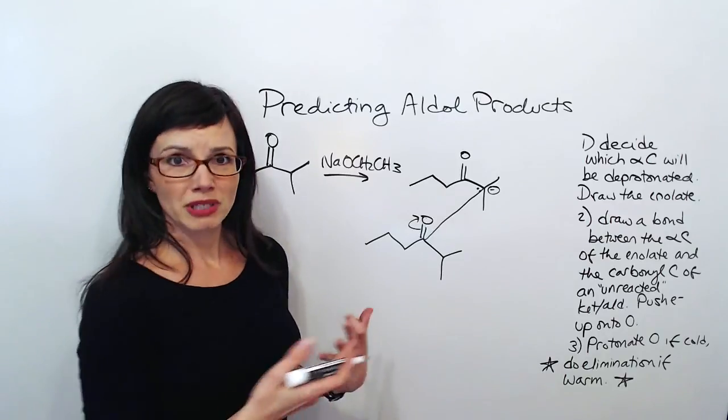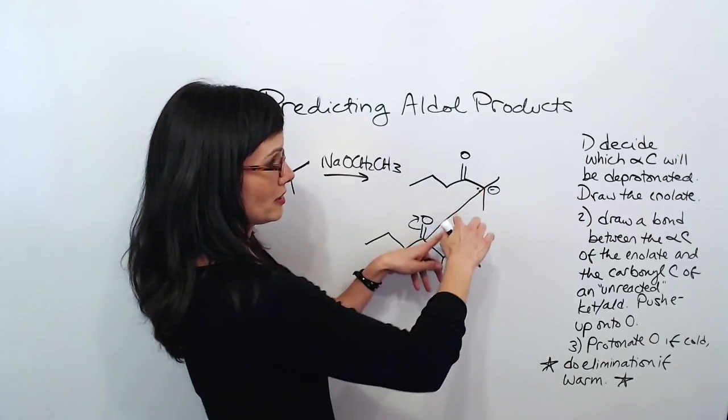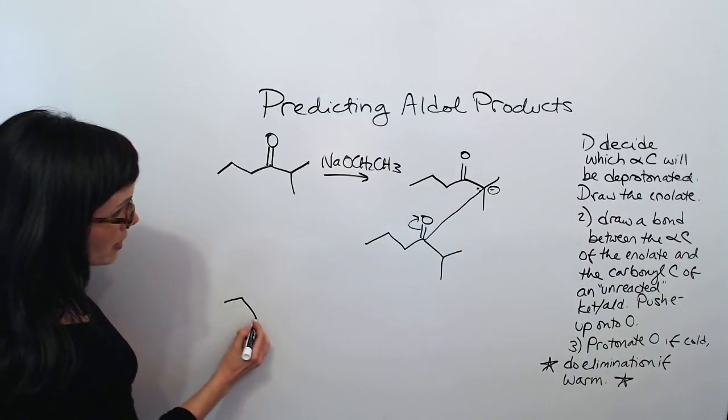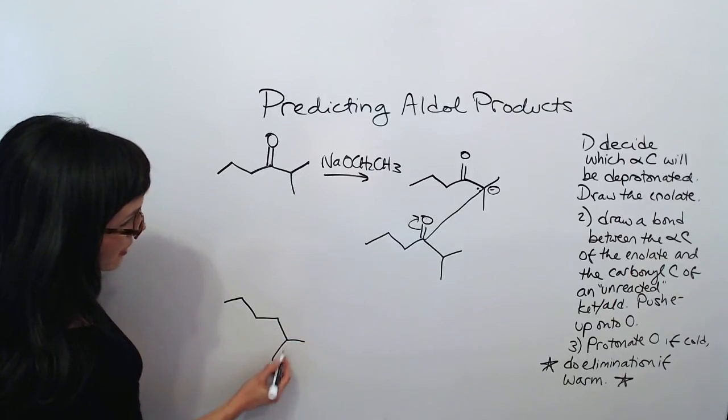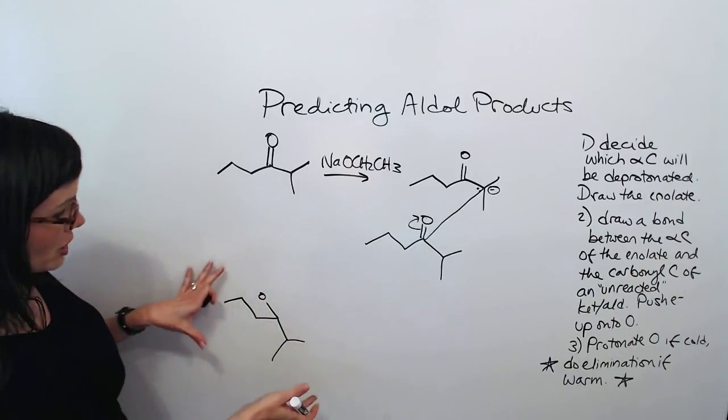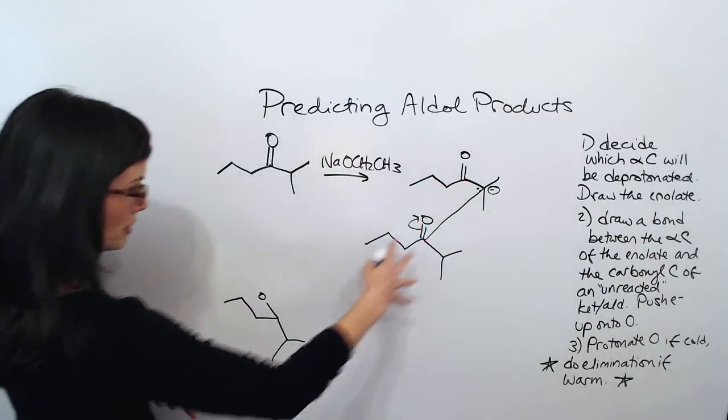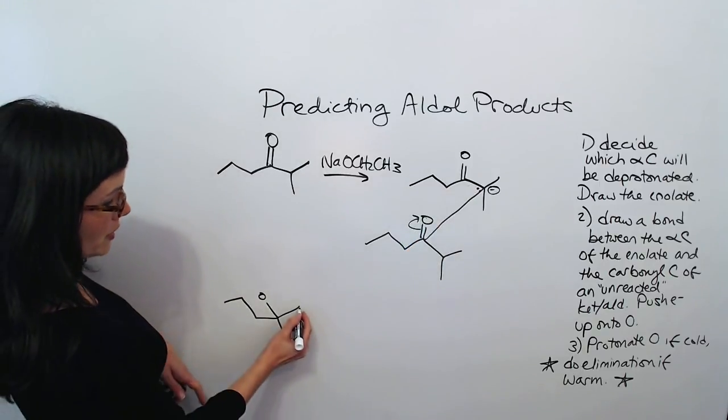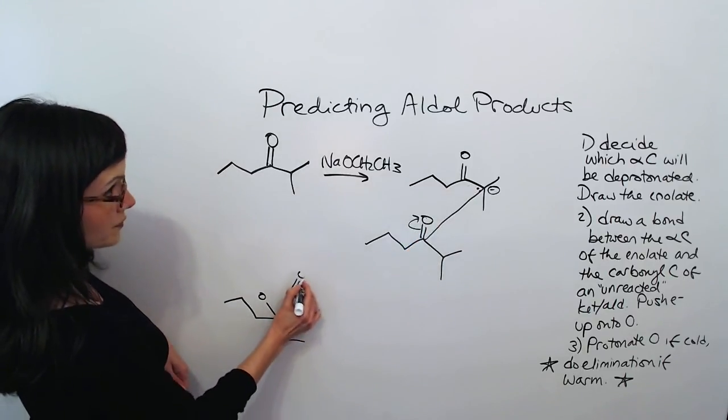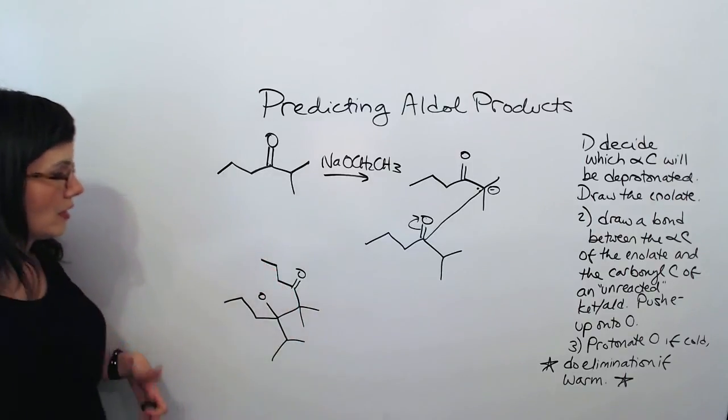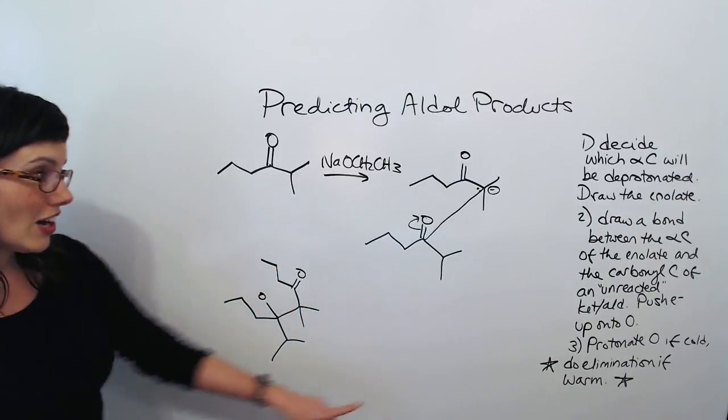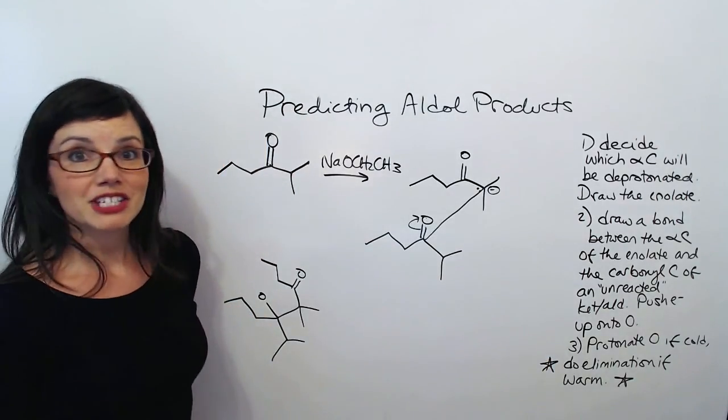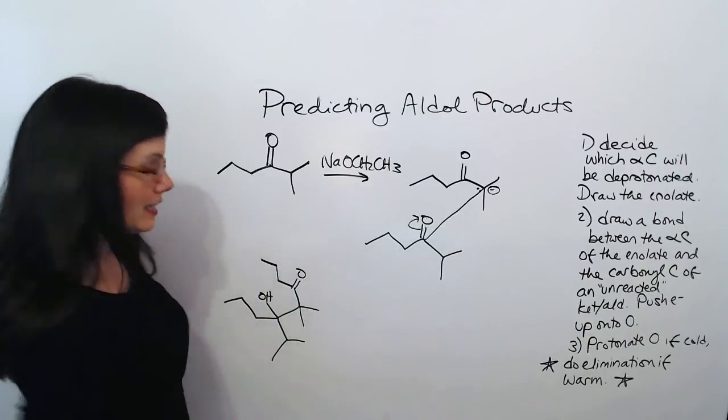Then all I have to do is really redraw this with this bond a little bit shorter and kind of rotate everybody around so they look a little bit prettier. So I'm going to redraw this guy. See how I'm kind of stretching it out a little bit to make room for this new molecule that I'm going to pull in. So here's my bond to that alpha carbon. I've made it a little shorter. That's my product. All that's left to do is to protonate my O. And when I'm not drawing the mechanism, that just means I stick an H on there. And I'm done.